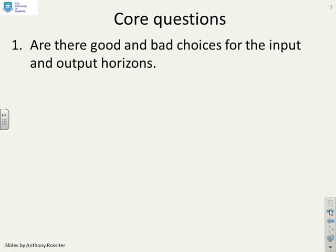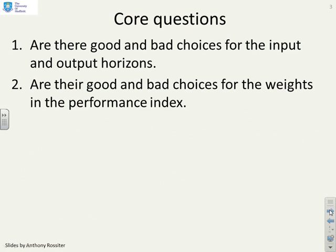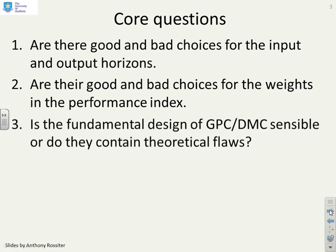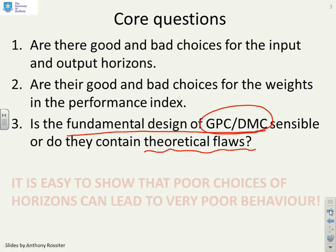Some core questions then. Are there good and bad choices for the input and output horizons? Are there good and bad choices for the weights in the performance index? And is the fundamental design of GPC-DMC sensible, or are there some major theoretical flaws within it? Conceptually it makes sense, but if we analyse it in more detail, are there flaws that we hadn't expected?